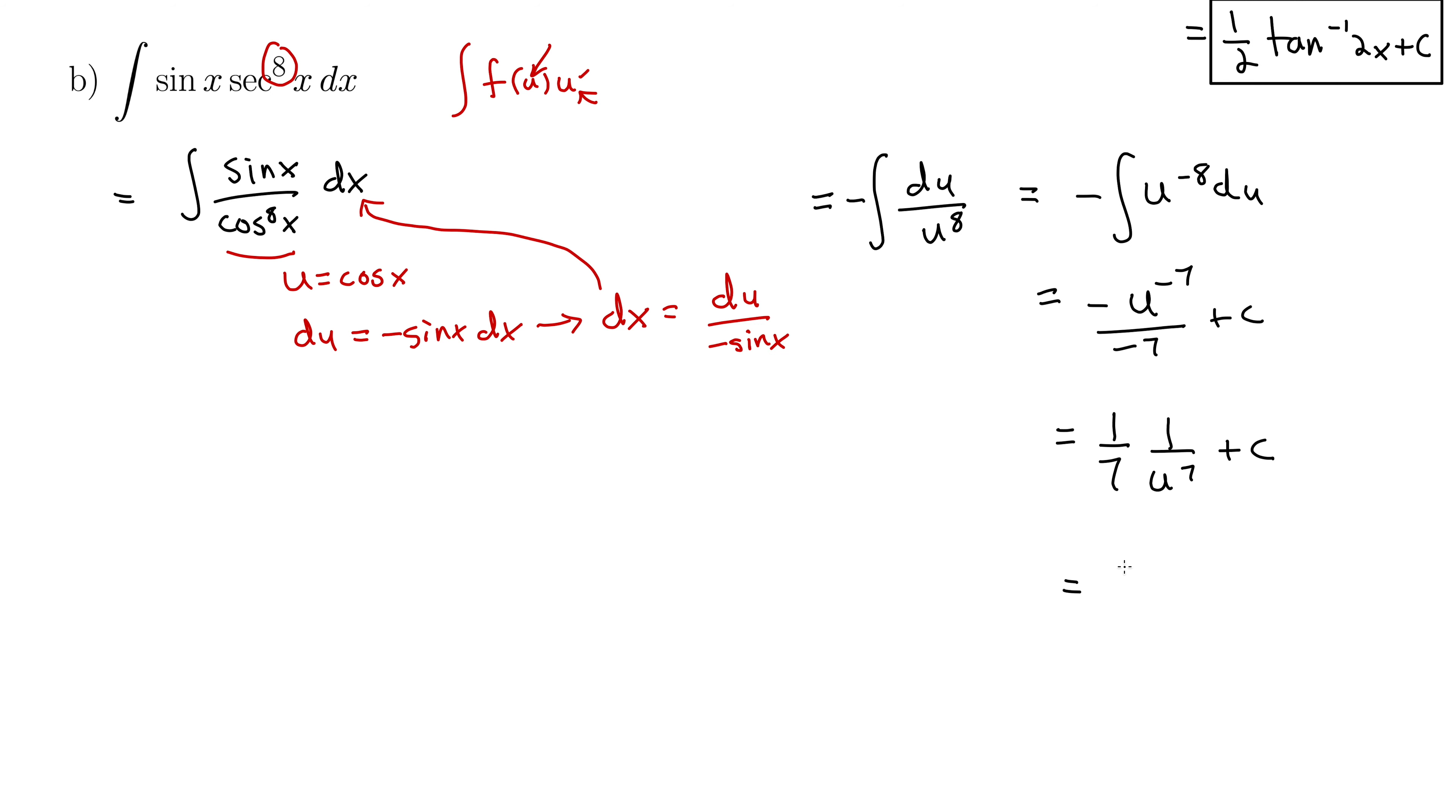Unless we're doing a definite integral, in which case there's some ways to look at that as an exception. So we have 1 over 7 cos to the 7th of x plus c. Well that's a perfectly fine answer. But we could be even more succinct and write this as secant to the 7th of x over 7 plus c. Which it kind of makes sense to do this considering the original integral was given in terms of secant.